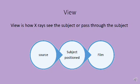Now coming to view. View is how x-rays look at or pass through the subject. If the hand is placed between source and film with the palm facing the source and the dorsum of the hand facing the film, the rays first encounter the palm, pass through to the dorsal side, and finally reach the film. This is how rays look at the position of the body — this becomes an AP view, meaning the exposure is antero-posterior.